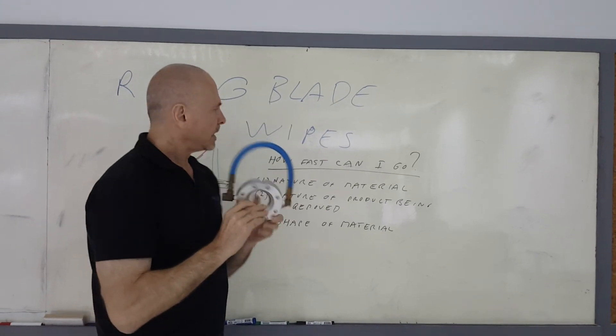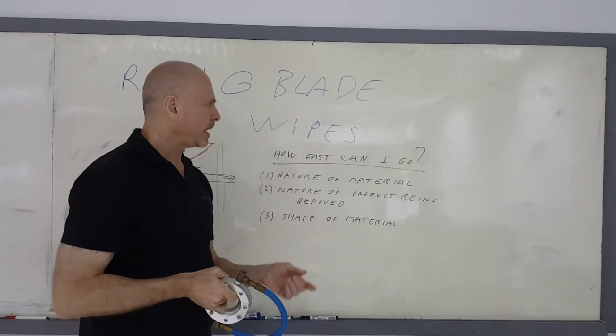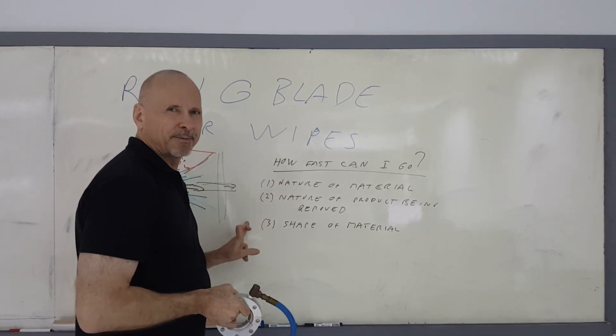So those are the options. As far as how fast you can go with the air wipe, it really depends on these factors: the nature of the material, the nature of the contaminant being removed, and the shape of the material.